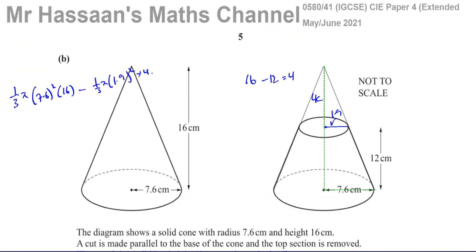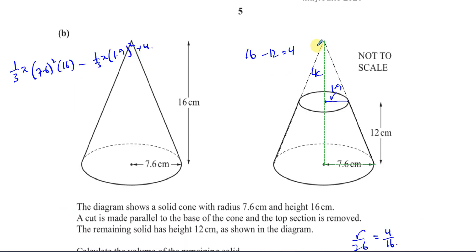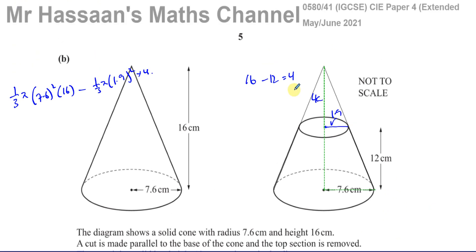That's Part B of question 3 from this paper, May-June 2021. These questions involve similarity and mensuration — areas, surface areas, volumes, and all those topics involved in these two questions. I hope that was clear. Thank you for watching and see you soon.